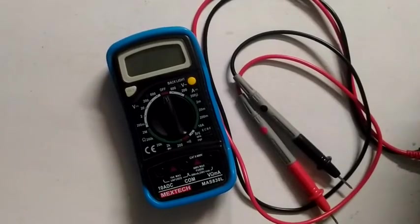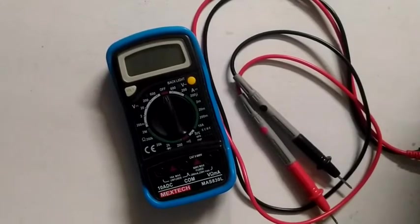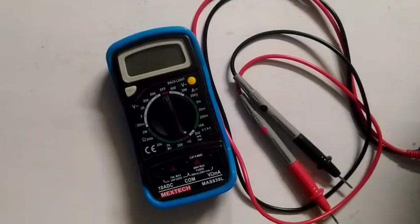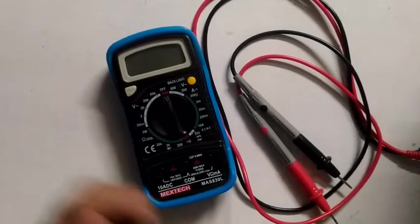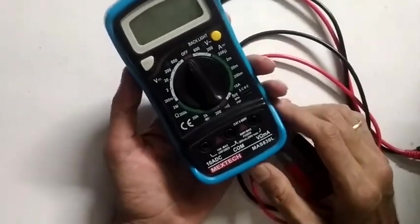Hello everyone, welcome to yet another video by Open Source Cook. In this video we are going to have a look at this multimeter and how to use it. This is a generic multimeter which you can get for around six to seven hundred rupees.